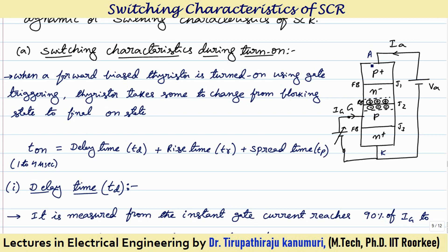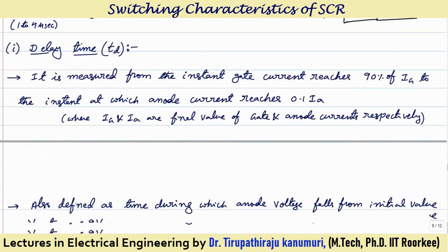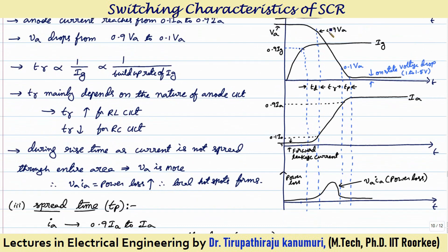Gradually the current starts spreading over the entire area. As it spreads, the resistance offered for the passage of current decreases, and automatically the voltage drop across the SCR keeps decreasing. During rise time you can see that both voltage drop and current are significant — the instantaneous product of voltage and current, which represents power loss, rises to a peak and then decreases.